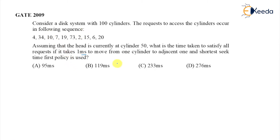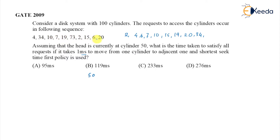For shortest seek time, the cylinder is at 50. The sorted order of requests will be: 2, 4, 6, 7, 10, 15, 19, 20, 34, and 73.